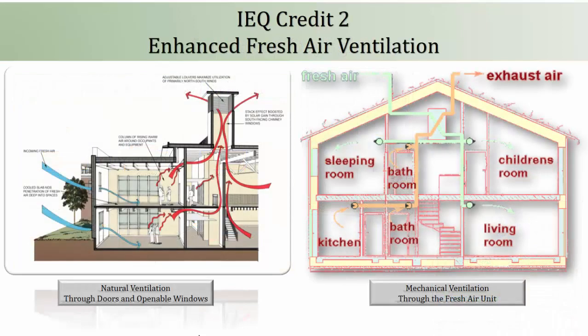IEQ Credit 2: Enhanced Pressure Ventilation. This credit resembles the third mandatory requirement and offers 2 points. The ratio of the openable area — either by windows or doors — in regularly occupied spaces is specified under the Green Home Guideline, which is slightly higher than the mandatory requirement for naturally ventilated and unitary air conditioning spaces. Now a minimum of 6.5 CFM per person is required for centralized air conditioning spaces to achieve the 2 points, compared to 5 CFM per person in the mandatory requirement.